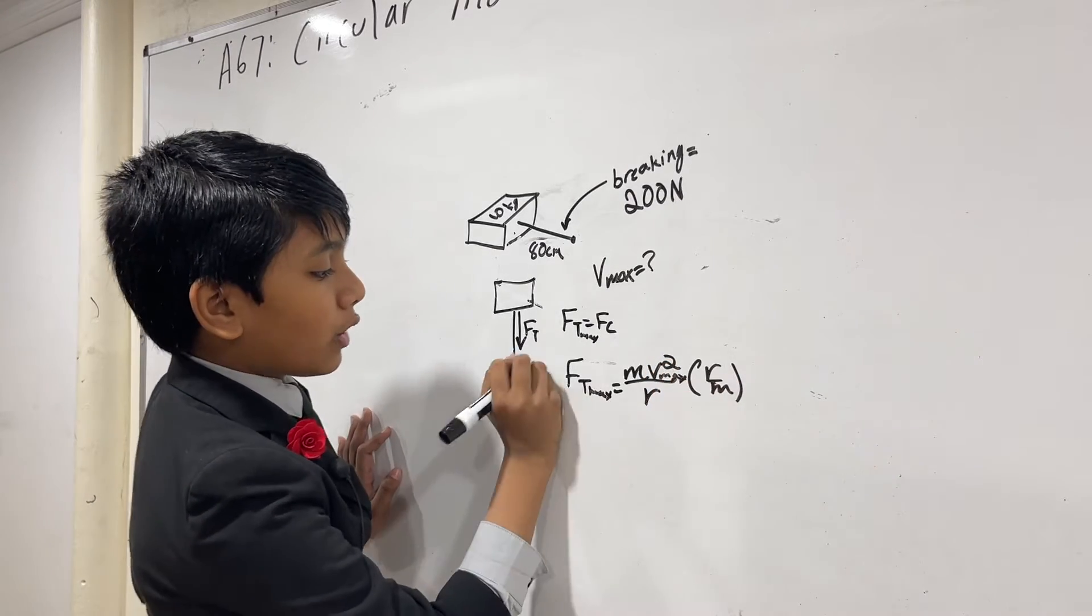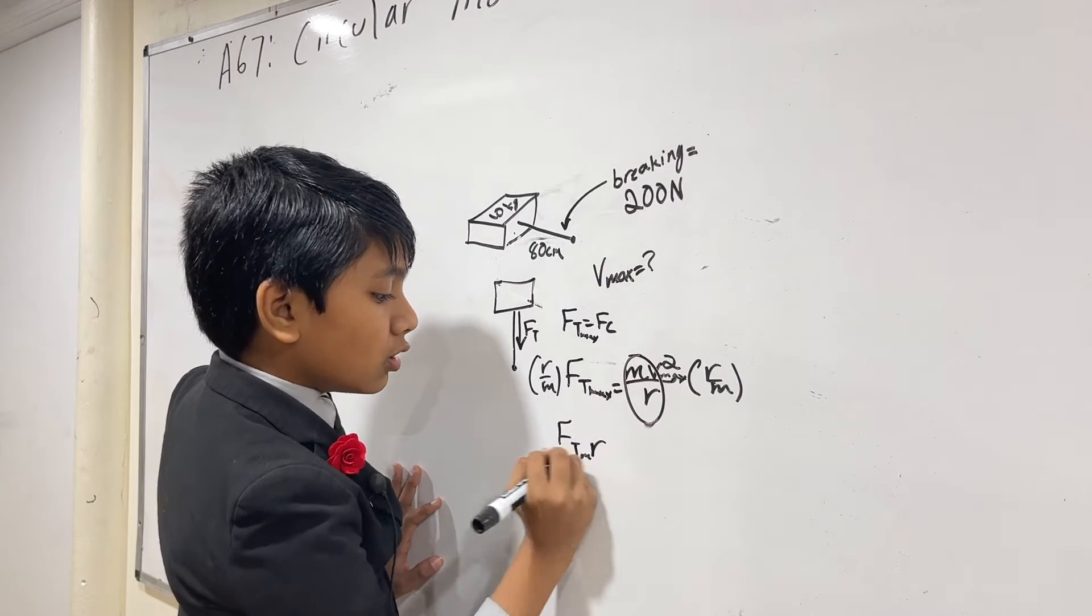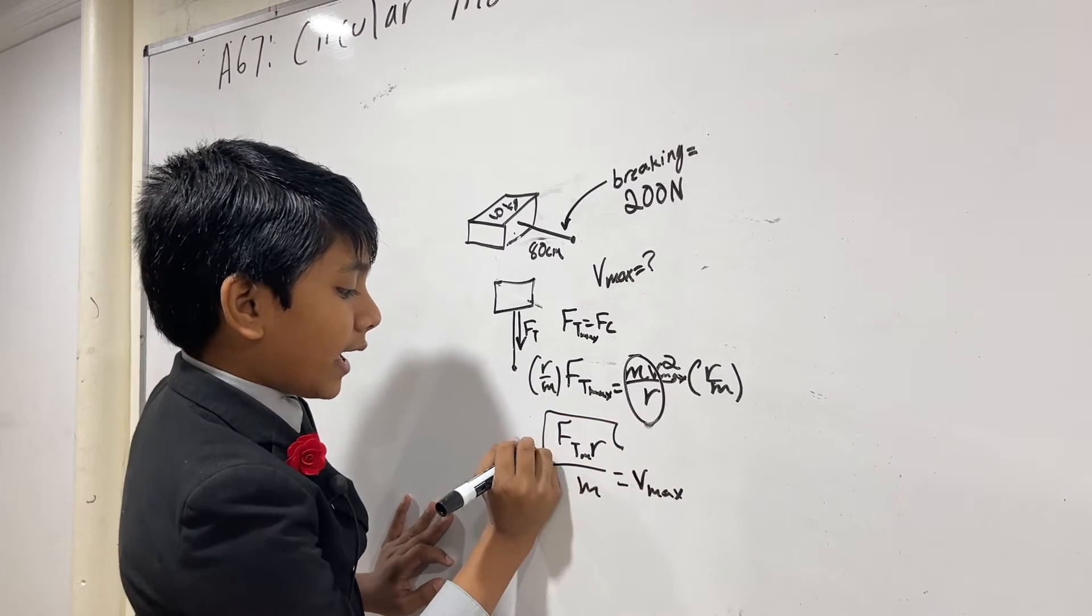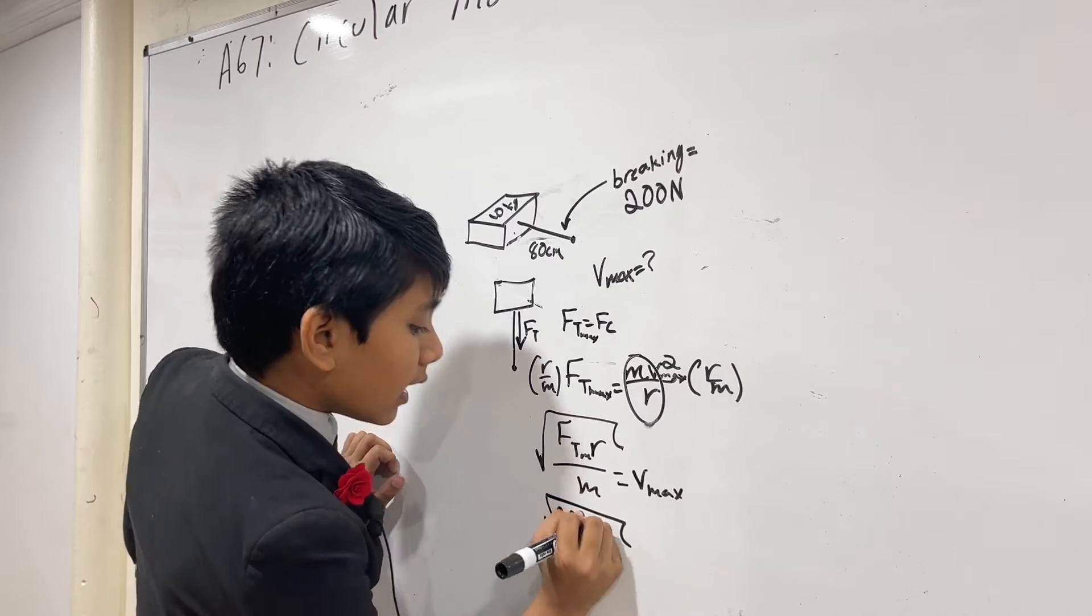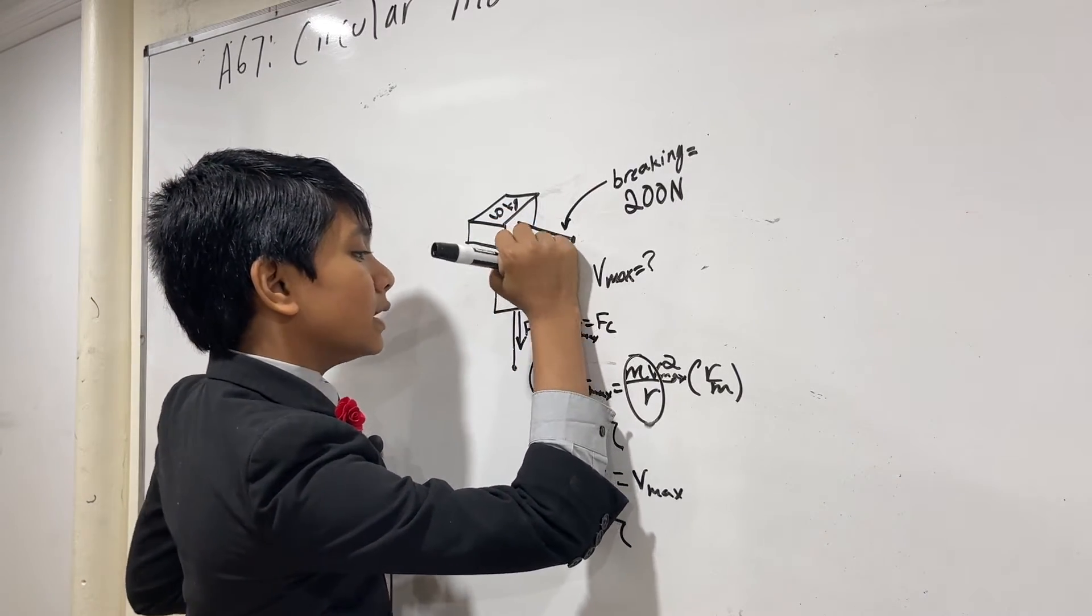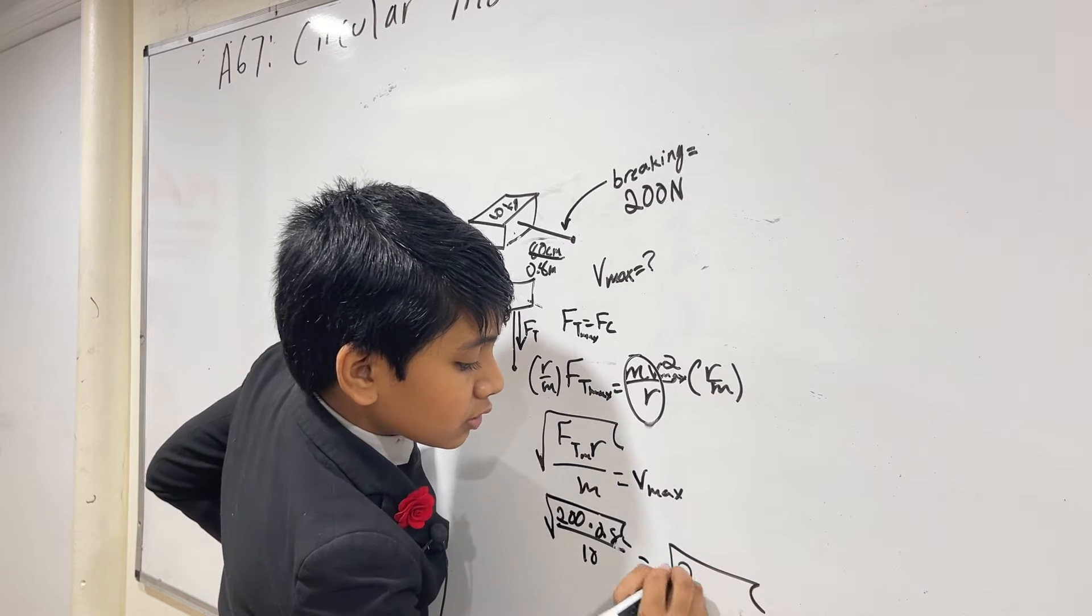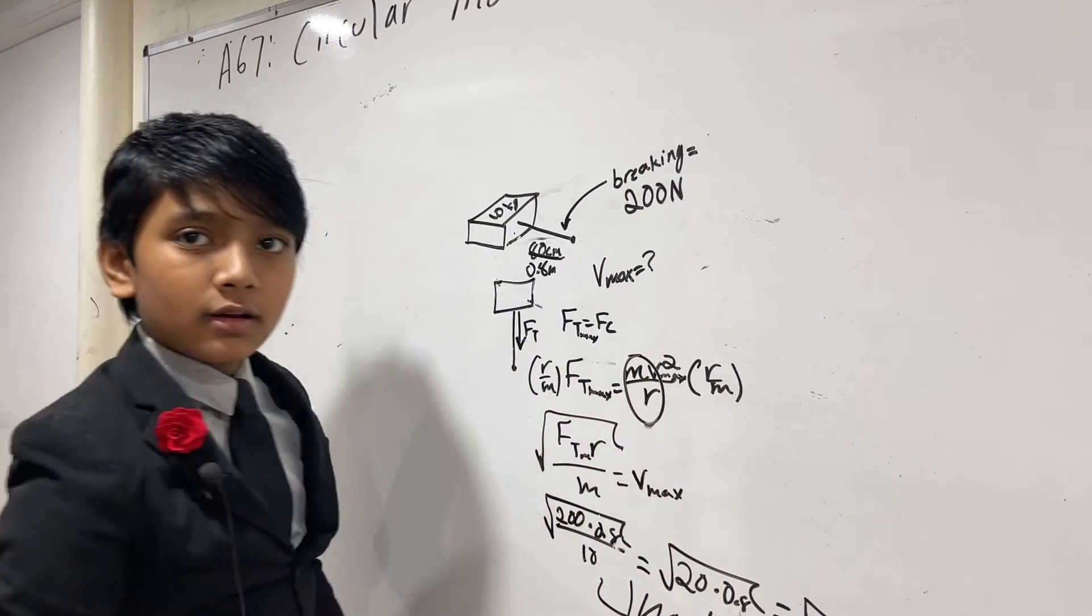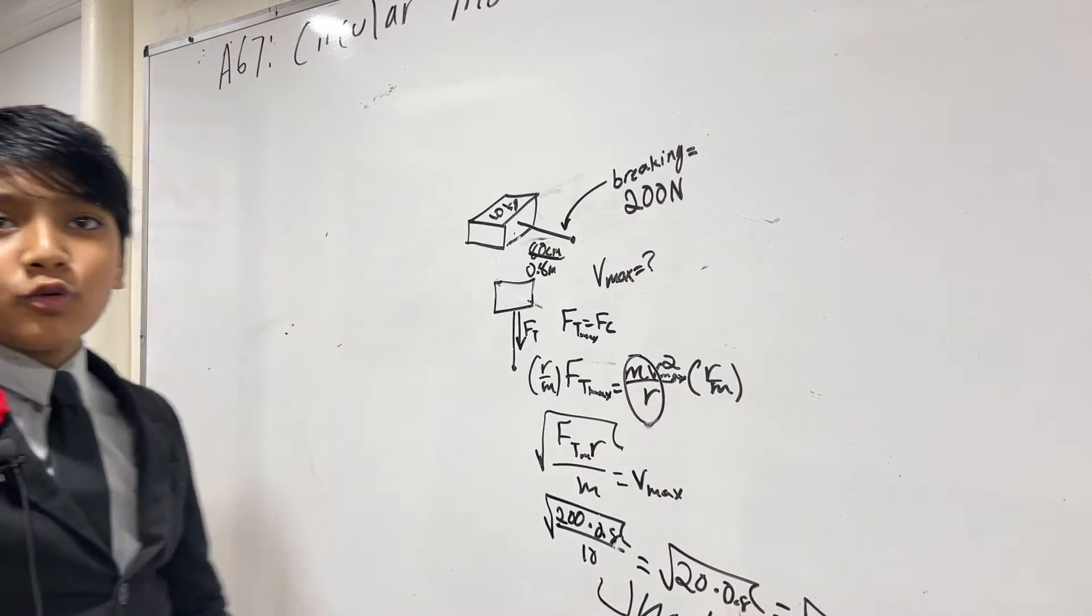So, now, we can multiply both sides by R over M. So, we get FT max R over M is equal to V max squared. So, now, taking the square root of both sides, we have the square root of FT max R over M. So, we just plug in, and we get 200 times, we've got to convert our units. 80 centimeters is no bueno. We instead have to use 0.8 meters. Over 10. So, that just gives us the square root of 20 times 0.8, which is the square root of 16, or 4 meters per second. You know what else is traveling at 4 meters per second? This bird. But, for real now, okay, I guess bird break is over.